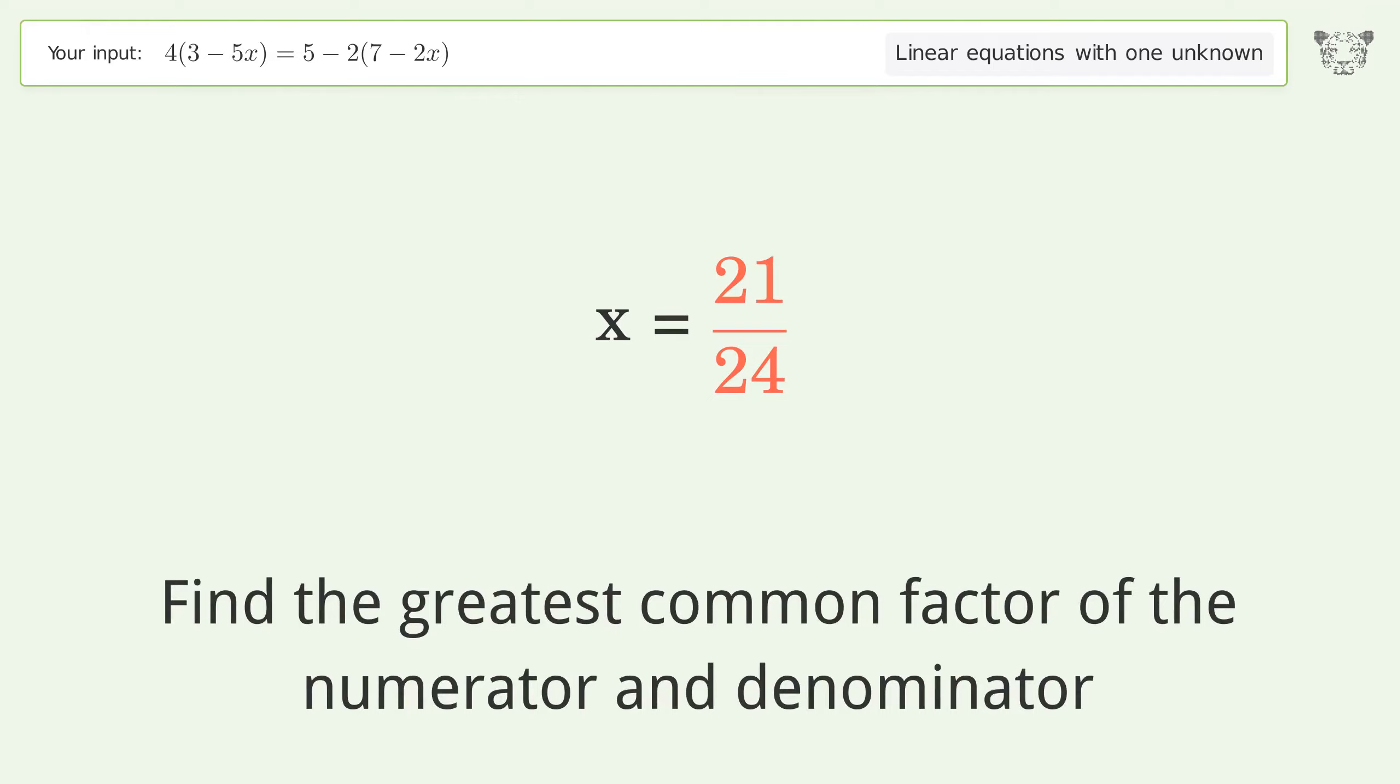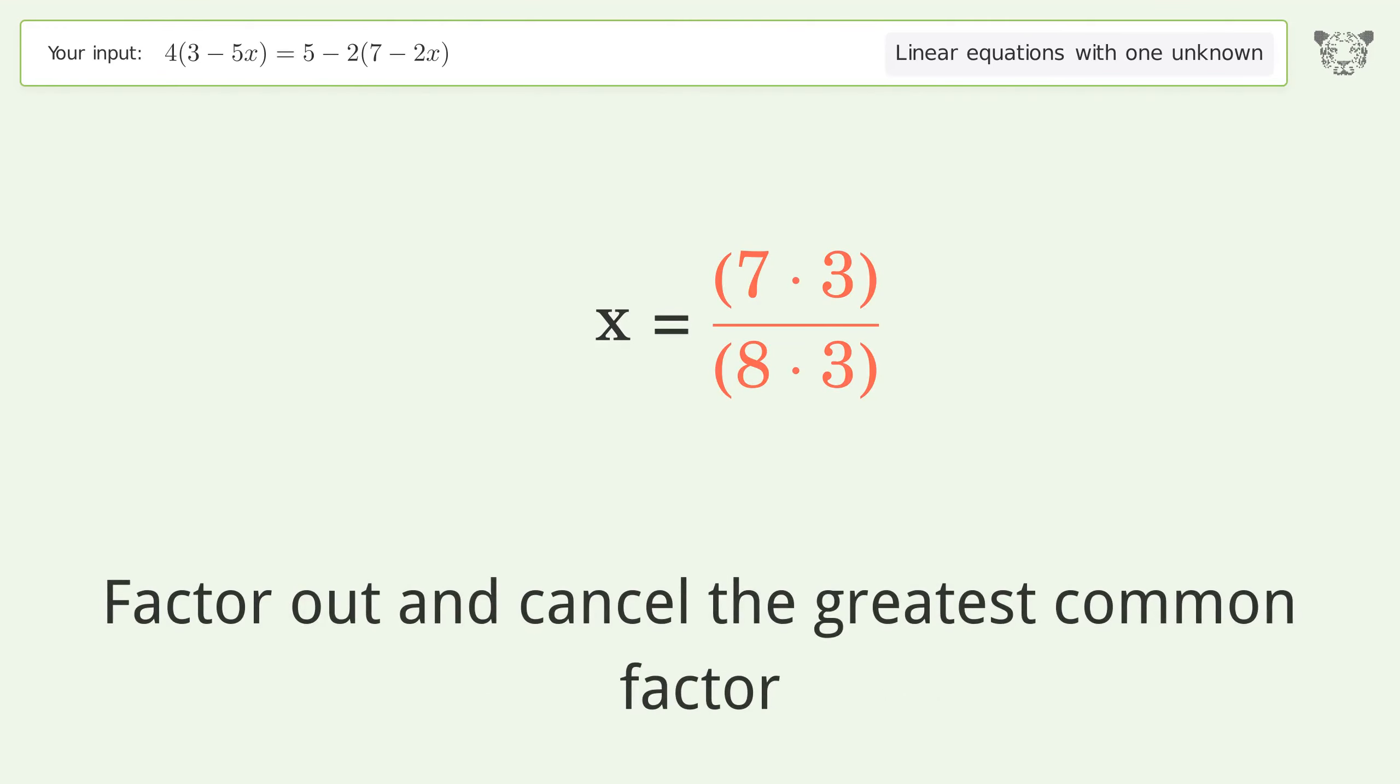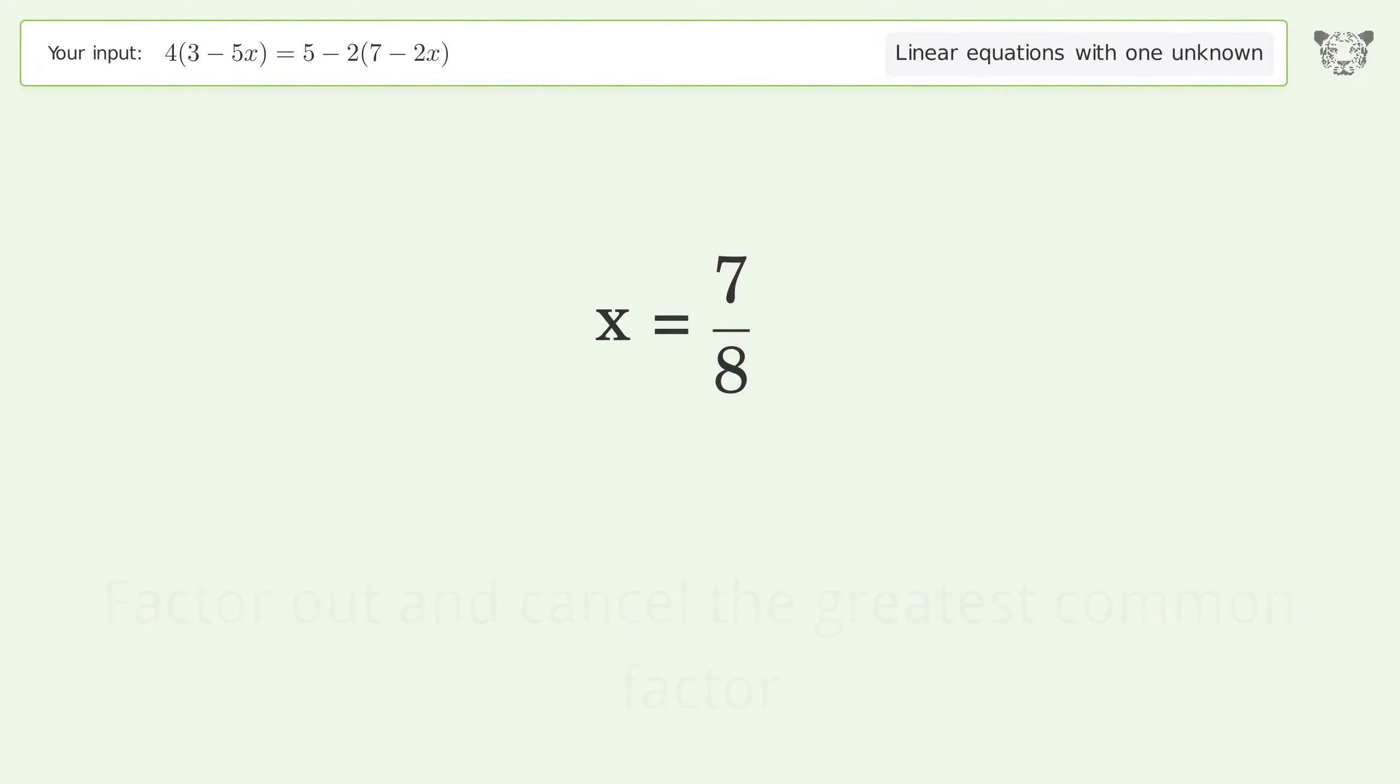Find the greatest common factor of the numerator and denominator. Factor out and cancel the greatest common factor. The final result is x equals seven-eighths.